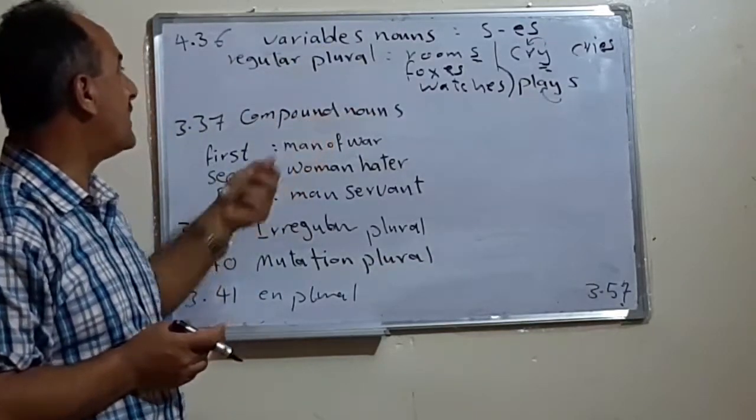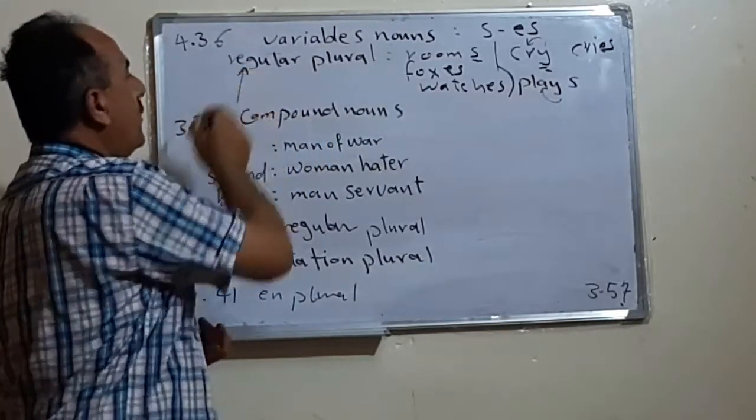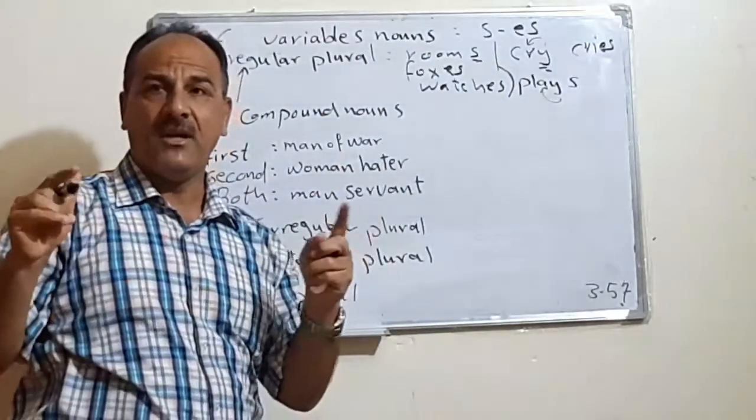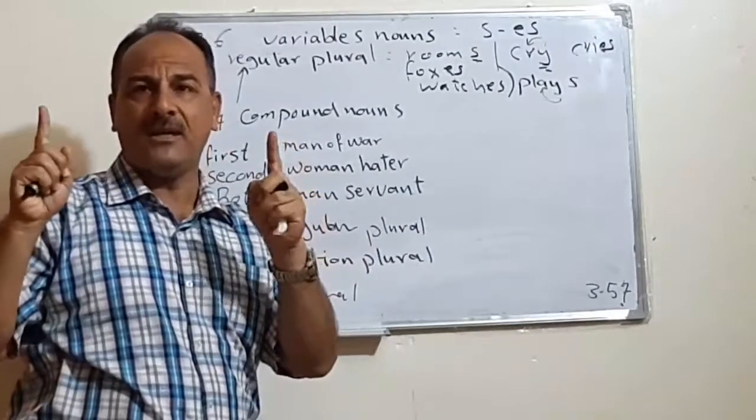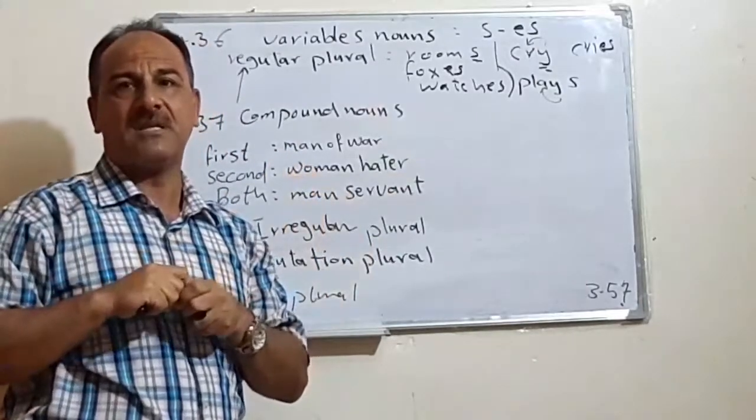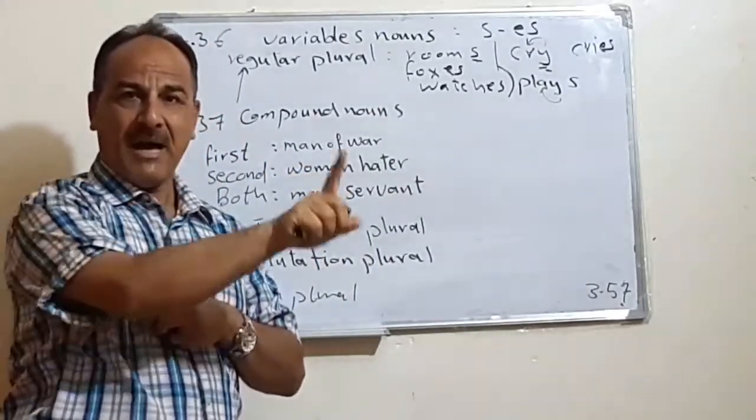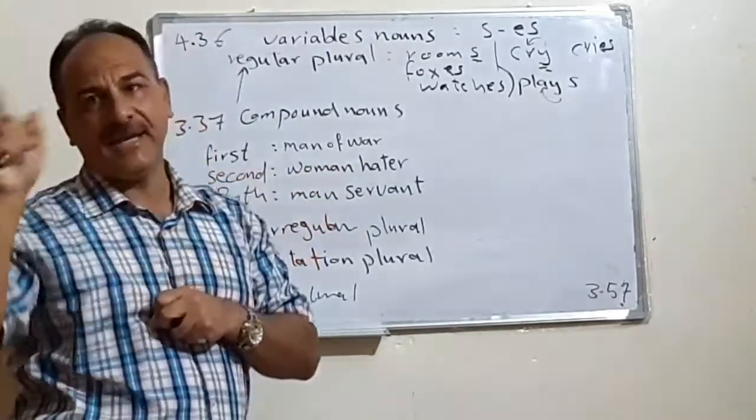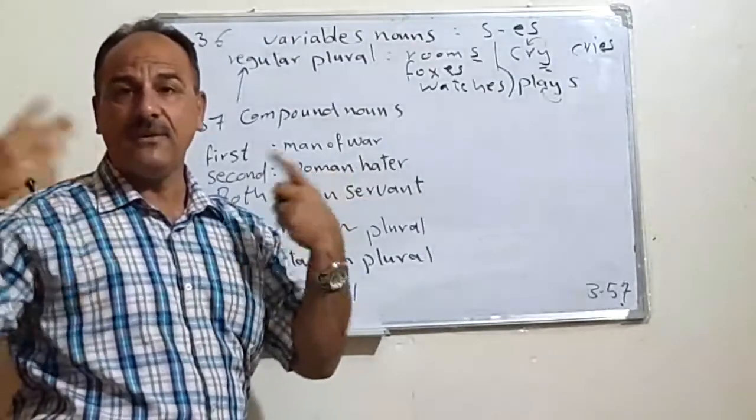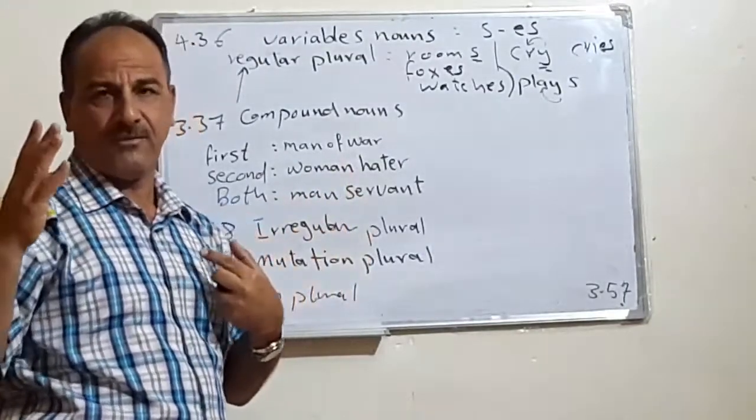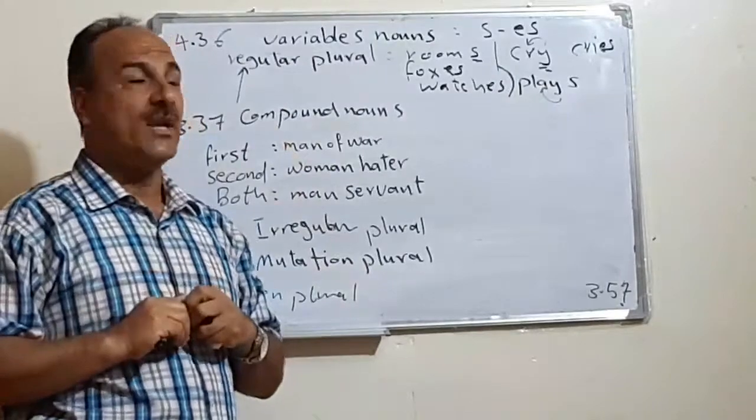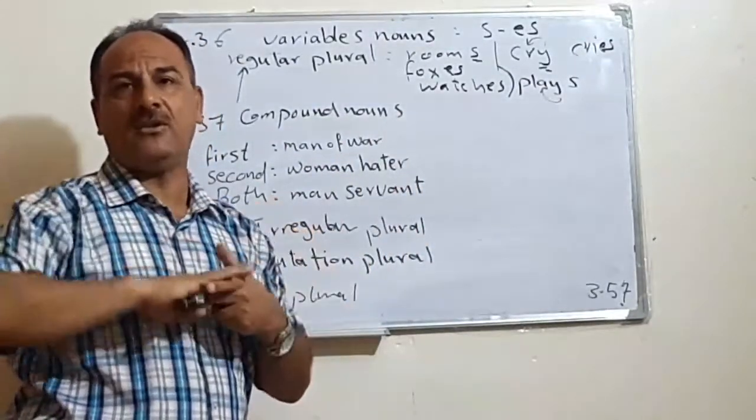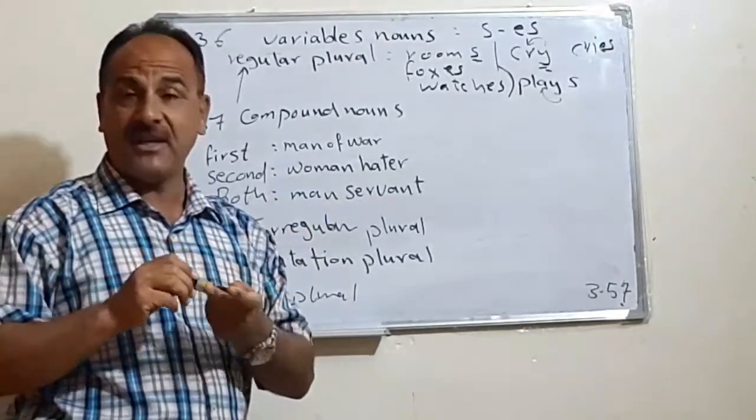What about the compound words? Still we have regular plural. But with the compound words, compound words means when we form one meaning from two words. Like for example bathroom, we have bath and room. We have armchair, we have greenhouse. How do we change the singular into plural?